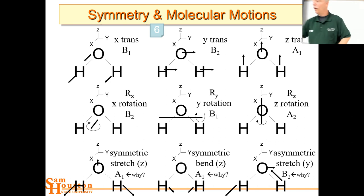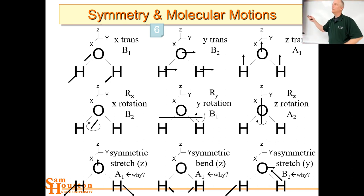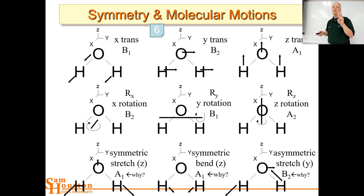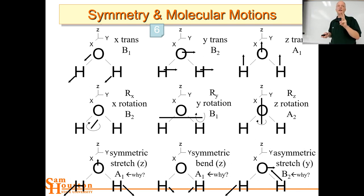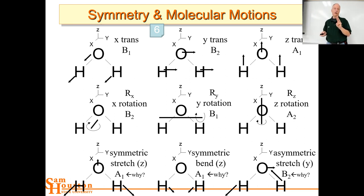There are always three translations and only three — write that down, because it's something people miss all the time. Translation: always three and only three. They are X, Y, and Z — the three Cartesian coordinates.